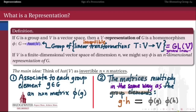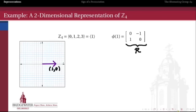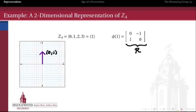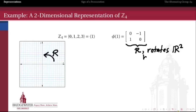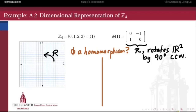Let's start by taking a two-dimensional representation of the group Z mod 4 — the additive group {0, 1, 2, 3}. We're going to think of 1 as a generator and associate to it the matrix R = [[0, -1], [1, 0]]. What does that matrix do? Applying it to the standard basis vector (1, 0) gives (0, 1), so that vector has been rotated 90 degrees counterclockwise. Likewise, applying R to (0, 1) gives (-1, 0) — also rotated 90 degrees. So the entire matrix R rotates R² by 90 degrees counterclockwise, and that's the matrix associated to the generator 1 of Z mod 4.